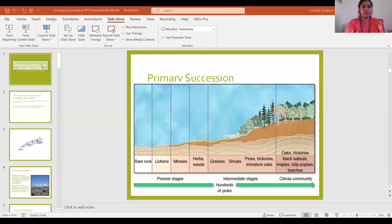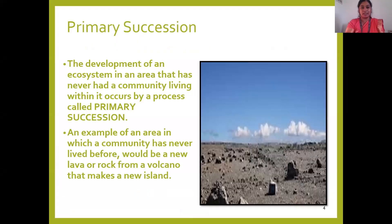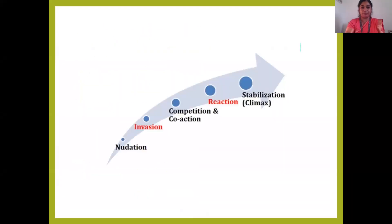Before we speak about how it happens, we will try to see how many types of ecological successions there are. Basically you have two types: we call them primary succession and secondary succession.